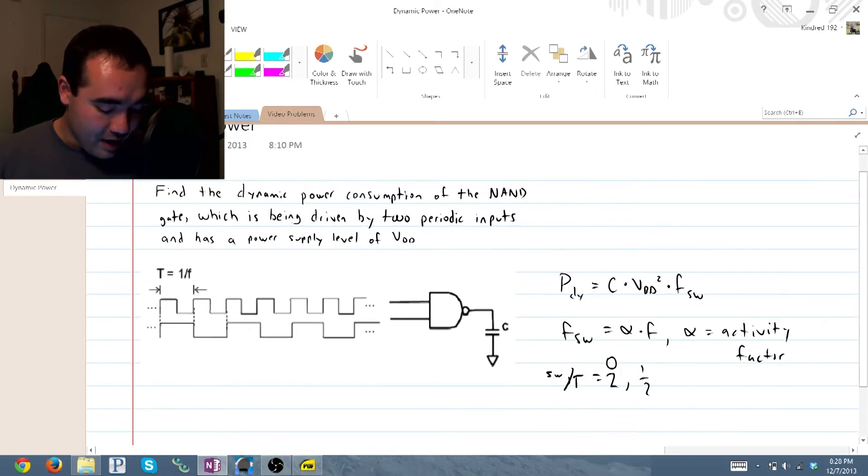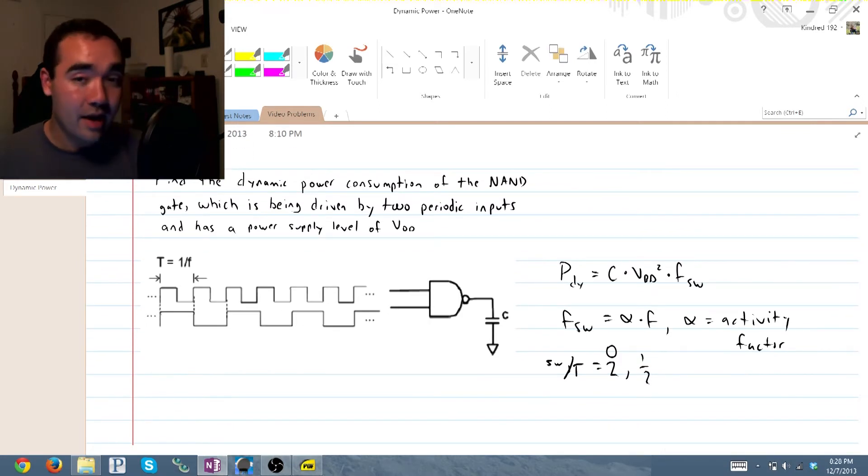So let's go ahead and look at this NAND gate and see what we're dealing with. Now first of all, the problem is very nice, and we don't have to derive our frequency or anything like that. It's just given to us as the inverse of some arbitrary period T.